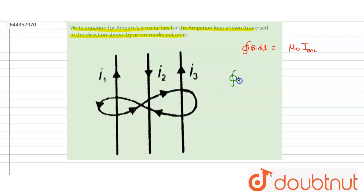It will be B dot dl equal to mu not, here mu not i1 plus for this loop. Let i2 is in the positive direction, then it will be mu not i2, and if this is opposite, then it will be minus i3.